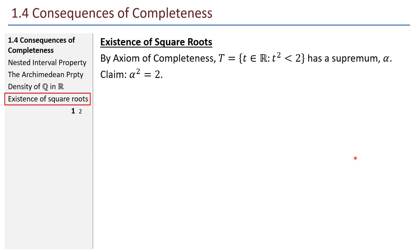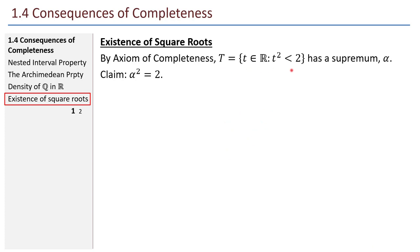This brings us to the existence of square roots. By the Axiom of Completeness, the set T of all real numbers where t² < 2 has a supremum alpha, and we claim alpha² = 2. On the first days of class we used the notation √2 rather loosely — we never really proved there exists a number whose square is 2. So we'll do that now: alpha is that square root of 2.